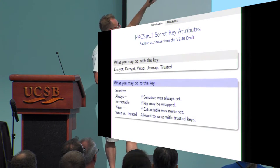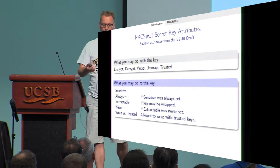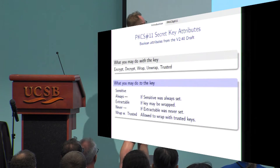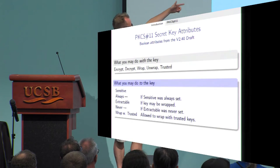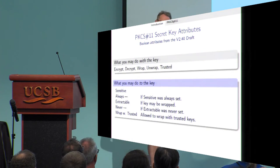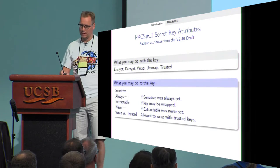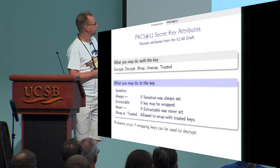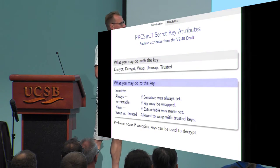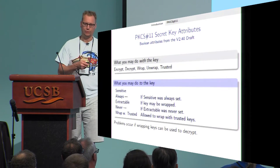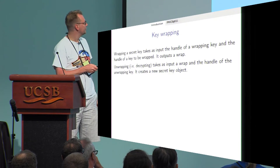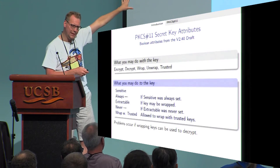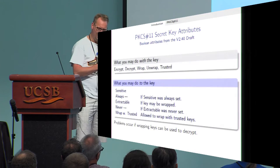There are also attributes governing what may be done to the key. For instance, an extractable attribute means the key may be wrapped, whereas if not extractable, it shouldn't be wrapped. Problems occur if wrapping keys can be used to decrypt, so you must set these attributes in a consistent way to avoid bad interactions.